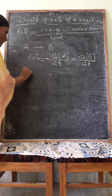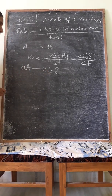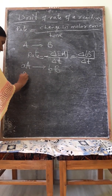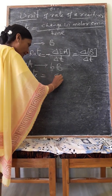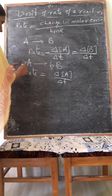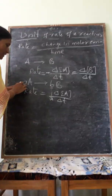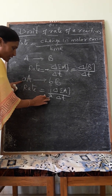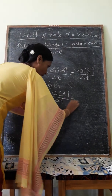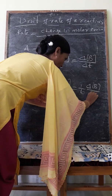Suppose we observe a reaction: aA giving bB. Small a and small b indicate the stoichiometric coefficients. The rate of reaction is equal to (-1/a)(delta[A]/delta t). The negative symbol is used for the reactant. It becomes equal to (1/b)(delta[B]/delta t) — concentration of product with respect to time.